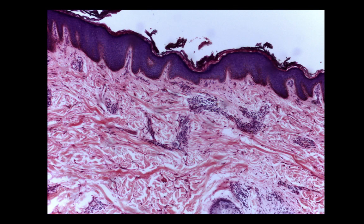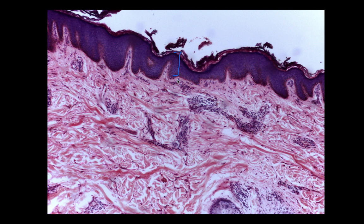Let's see where we can find areolar connective tissue. This is actually a slide of the scalp. Up here we see the epidermis, which is that stratified squamous epithelial tissue. And then all of this down here would be the dermis, which is made up of connective tissue. Up here looks kind of very fine and delicate, and that is actually going to be the areolar connective tissue — it's called, if you've had the integumentary unit, the papillary layer.